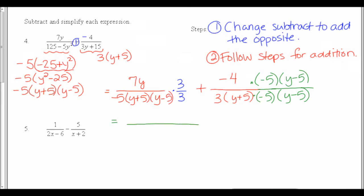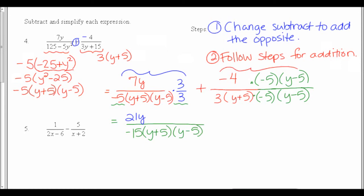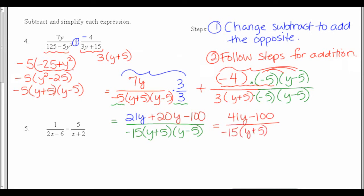The denominator stays the same — I'll write my negative 5 and my 3 together as negative 15, and I had y plus 5 and y minus 5. Then I put together the tops: the top of the first fraction was 7y times 3, which is 21y. On the second fraction, I had negative 4 times negative 5 times y minus 5. Going left to right, negative 4 times negative 5 is positive 20. I distribute that to both the y and the minus 5, giving positive 20y and positive 20 times negative 5 is negative 100. Combining like terms: 21y plus 20y is 41y, then minus 100, over negative 15 times y plus 5 times y minus 5.